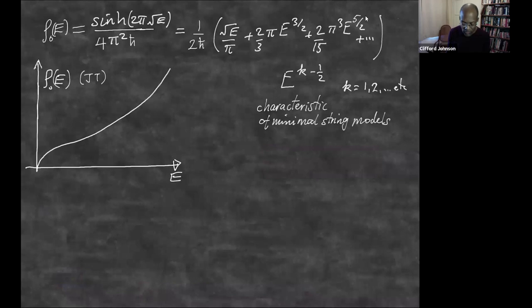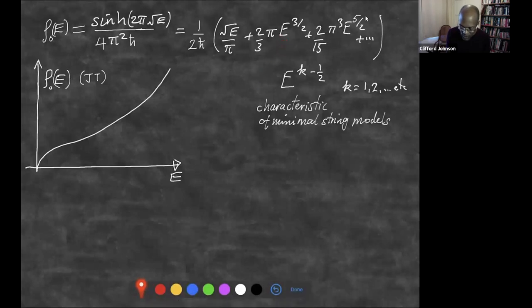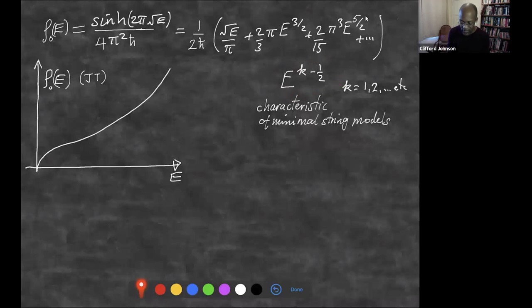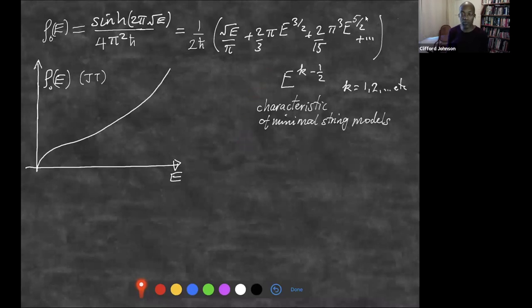If I take the sinh function and expand it, I see various powers: sqrt(E) and higher powers, characteristic of the minimal string models. JT gravity contains all of them in a particular combination. Looking ahead: is there a meaningful way to combine the minimal models so they all contribute their characteristic power of E in the combination that rebuilds the sinh function? That will work at the disk level, and then because I have ways of defining minimal models beyond perturbation theory, that technology will help define JT beyond perturbation theory as well.